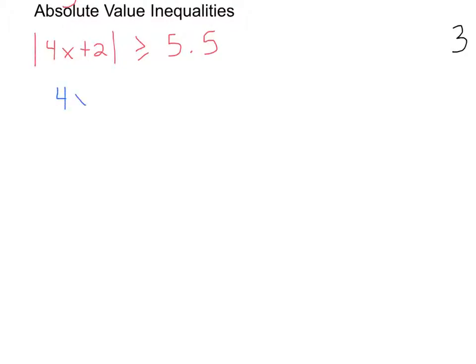So the first one I'm going to write is exactly what I see. 4x plus 2 is greater than or equal to 5.5. So I wrote it just like I what? See it. Now on the second one, I'm going to write it 4x plus 2. But I have to flip the sign, less than or equal to, and I need to change the 5.5 to negative 5.5.